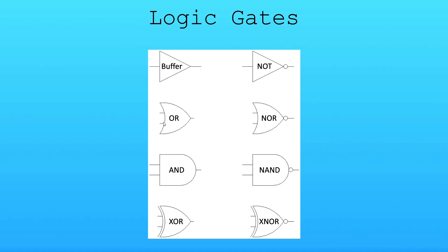Then we have the OR gate, which is quite widely used. If we don't input anything we won't get an output, but if we input something we'll get an output. An AND gate will only activate if both inputs are on — if one input is zero, the output will always be zero.